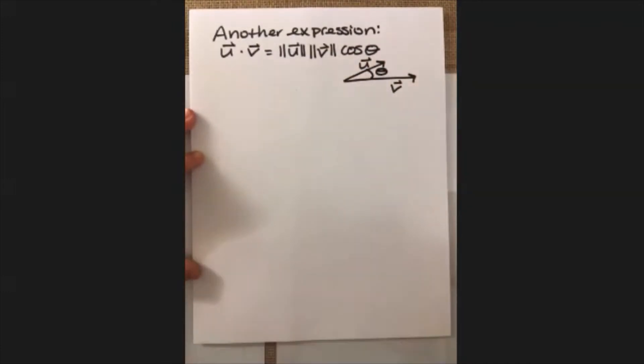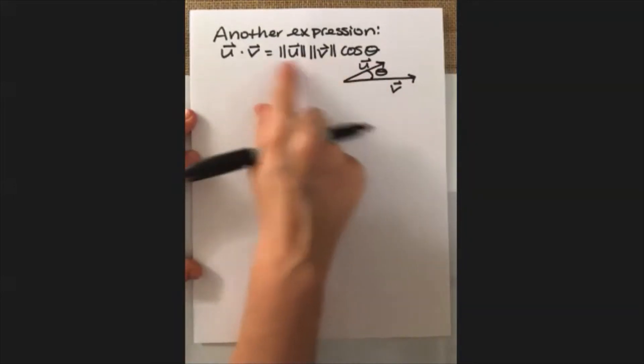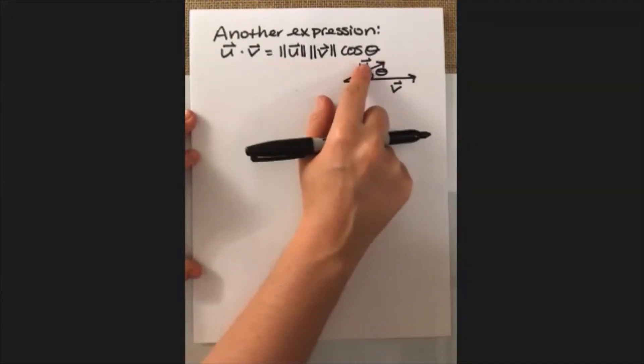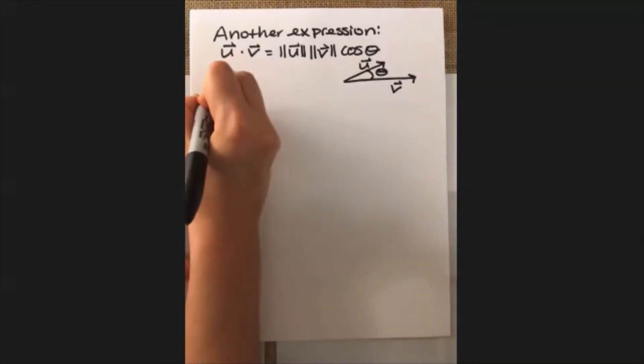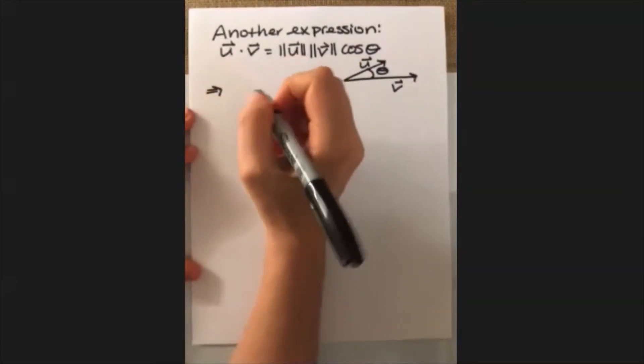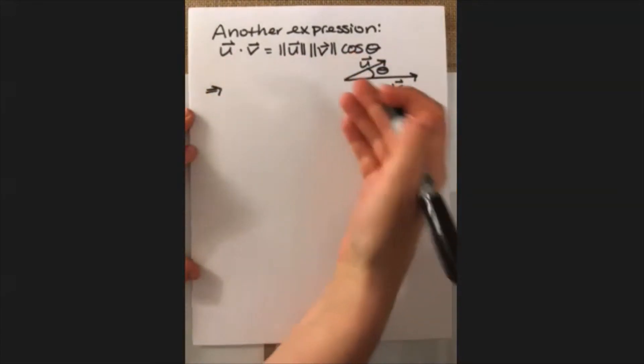So what we're looking at then is if this is u and this one is v, then this right here is theta, and the dot product gives us a notion of the relationship between the lengths of them and the angle between them. And one way to kind of think about this is that it's a measure of how similar these two vectors are.